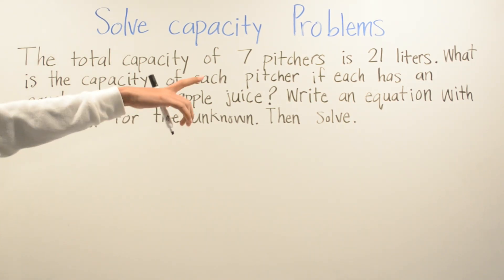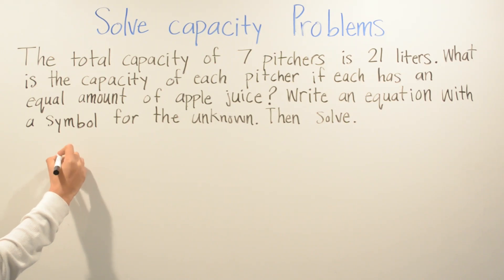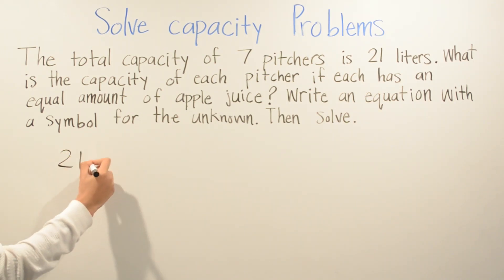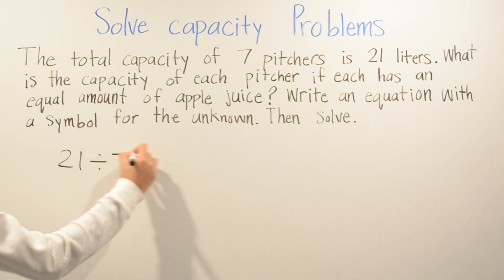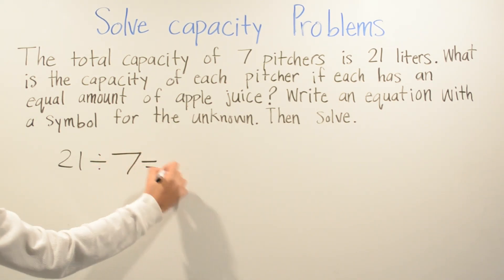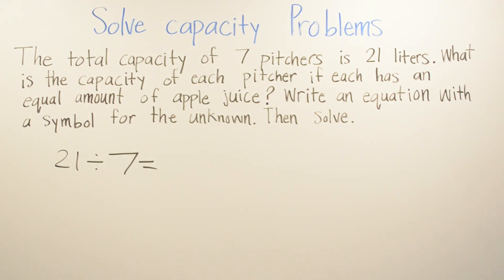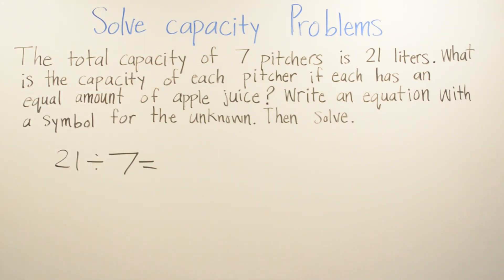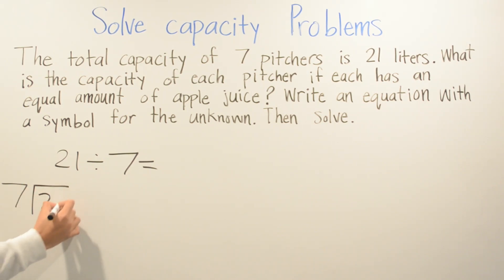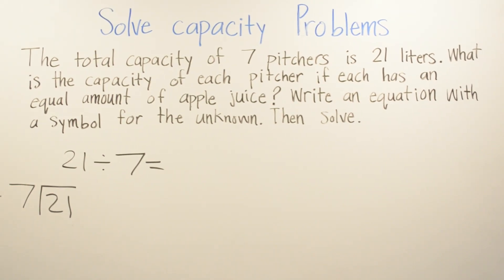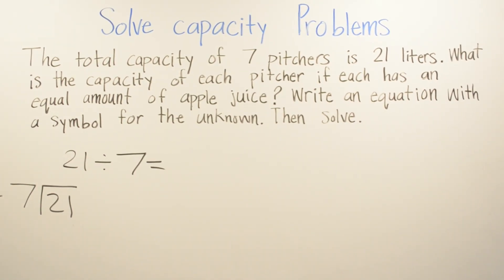We're going to divide 21 liters. We have to divide 21 by 7 because there are 21 liters and 7 pitchers. We're going to do our math right here on the side. How many times does 7 go into 2? Zero times. Write 0 here.